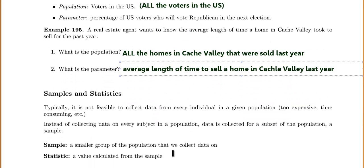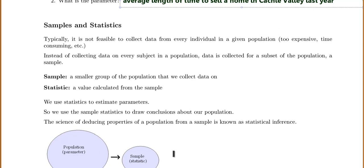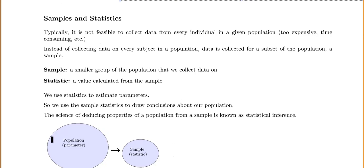Now let's talk about samples and statistics. Typically it's not feasible to collect data from every individual in a given population — it's too expensive, too time-consuming, etc. So instead of collecting data on every subject in the population, data is collected for a subset of the population, called a sample — a smaller part. The sample is a smaller group of the population that we collect data on, and a statistic is a value calculated from the sample.